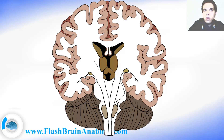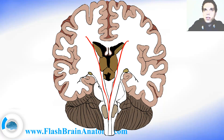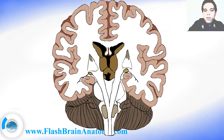To see this, check out my lesson about the mesencephalon or the midbrain. As I mentioned, this is the internal capsule on both sides, and the internal capsule divides the thalamus and the caudate nucleus from the pallidum and putamen. So we have the putamen and the pallidum.